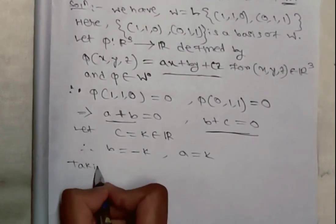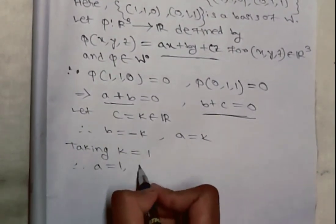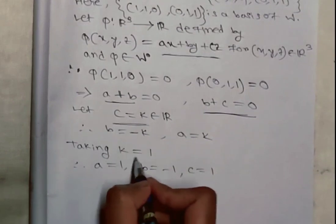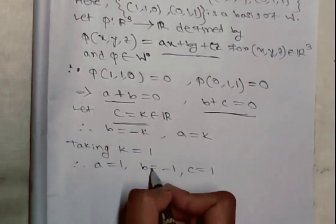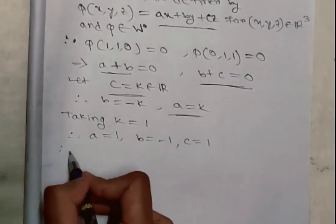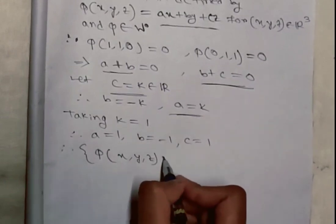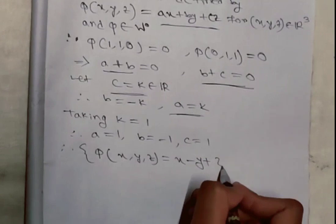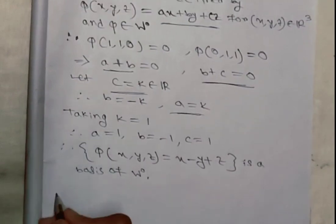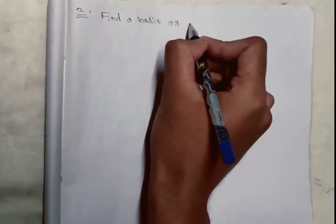Putting the value of b into the first equation, we get a = k. Now taking k = 1, we get a = 1, b = -1, c = 1. So the basis of W⁰ is {φ} where φ(x,y,z) = x - y + z.